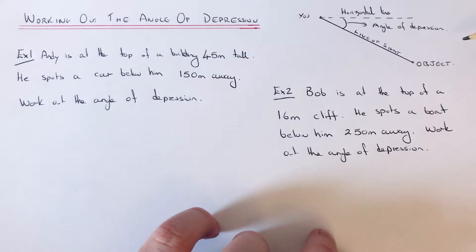Today I'm going to show you how to work out the angle of depression. So the angle of depression is the angle between you and an object on the ground, and it's the angle between the horizontal at the top and the line of sight.